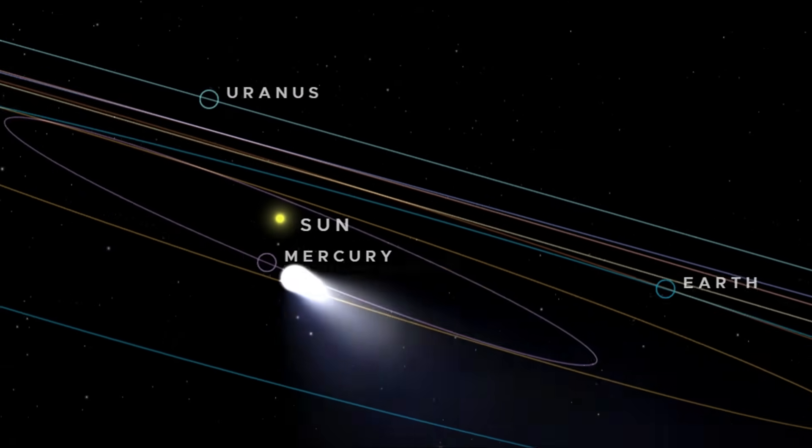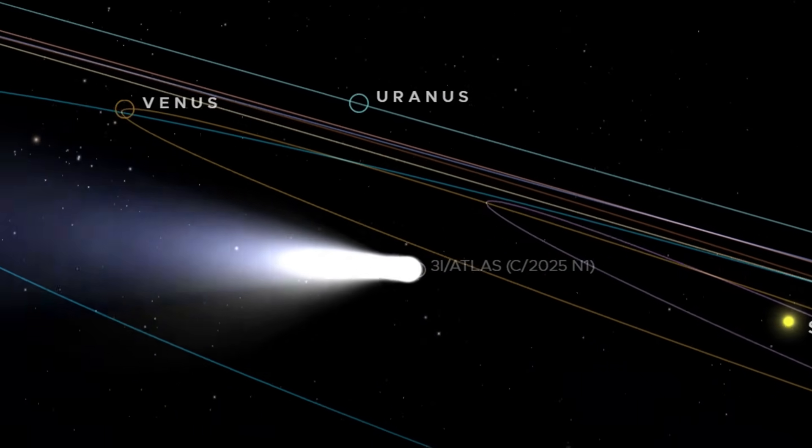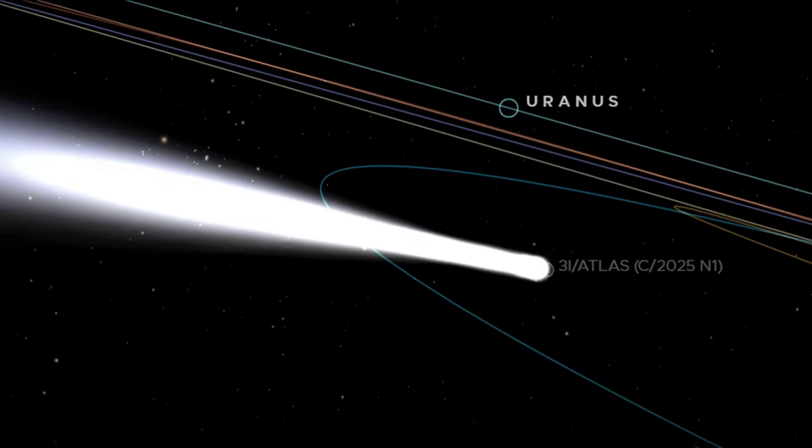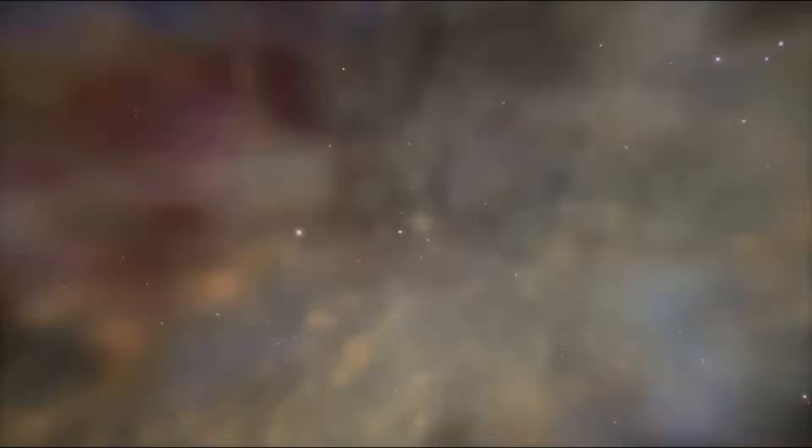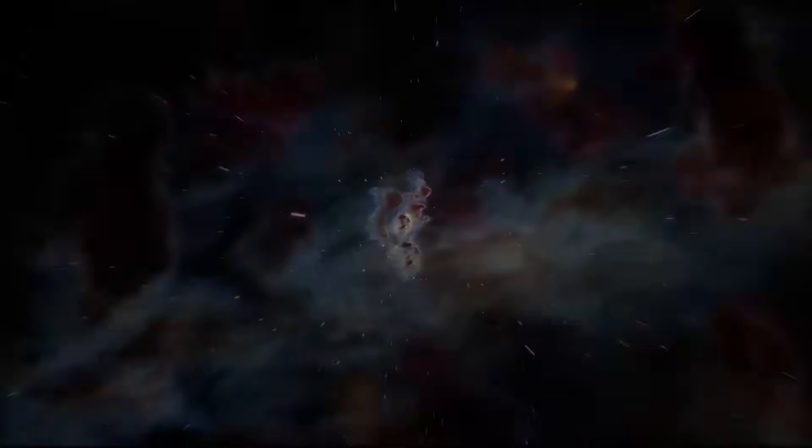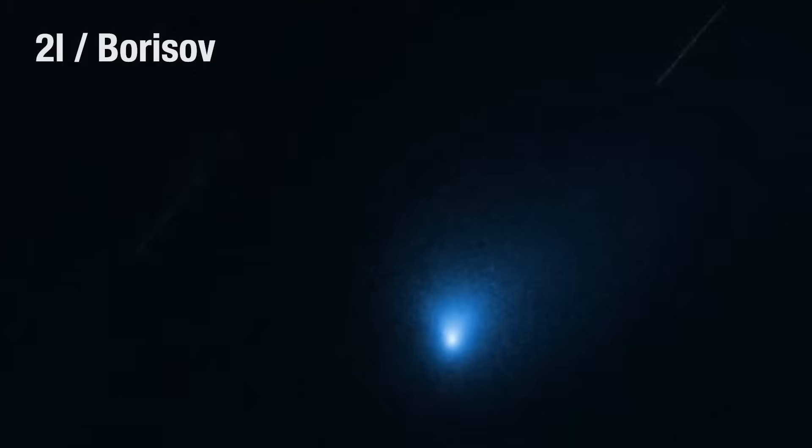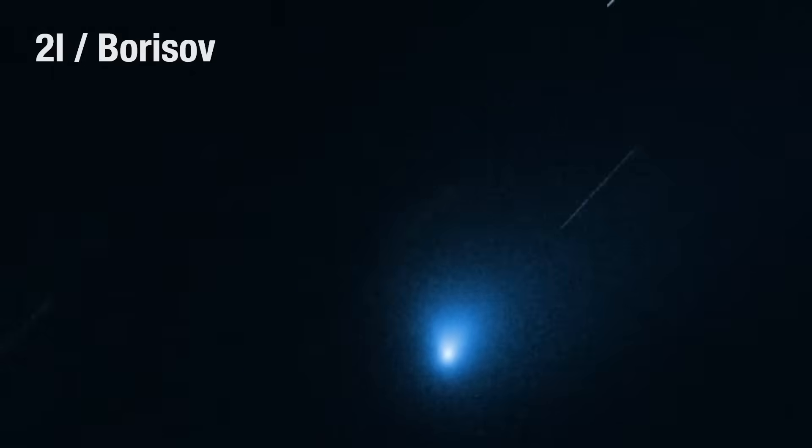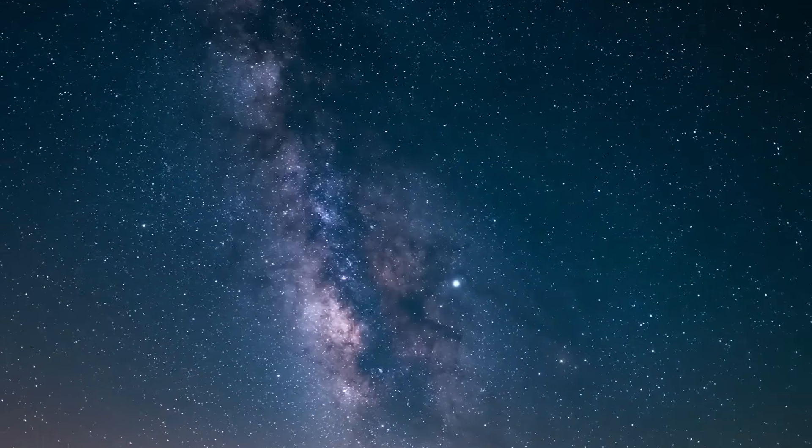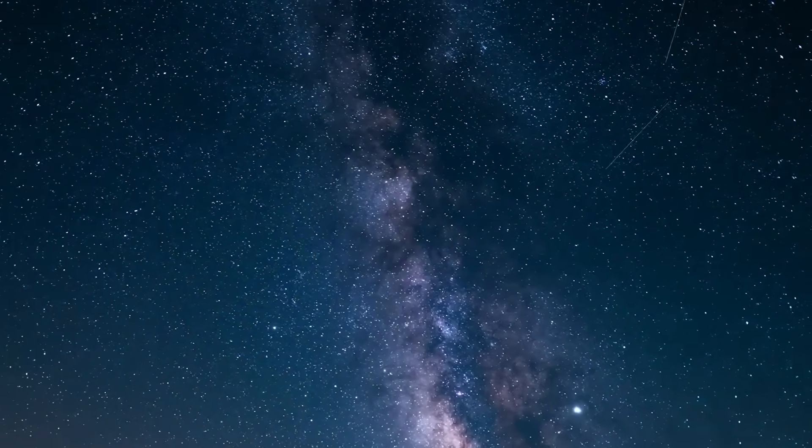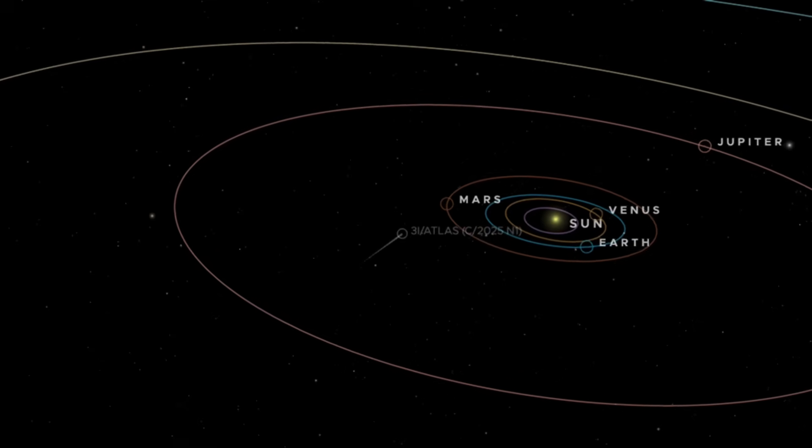The real 3I Atlas was discovered on the 1st of July, 2025, by the Atlas Telescope System in Hawaii. The 3I in its name designates it as the third interstellar object, after Oumuamua and 2I Borisov. It is the third visitor mathematically confirmed to have come from another star system.